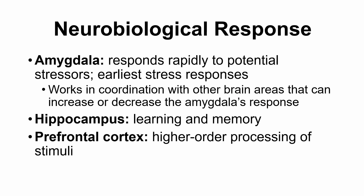The amygdala responds very rapidly — it is our initial response point and the earliest of our stress responses. It sometimes starts reacting even before we have any conscious awareness of the threat. It works in coordination with other brain areas to increase or decrease its response. For example, you may see a bear and panic, but your prefrontal cortex — which does higher-order processing — might tell you it's just a poster of a bear, not a real bear, so you can calm the amygdala's response. There is interplay between all these different areas.